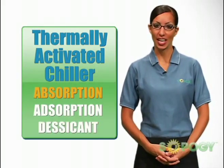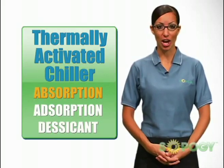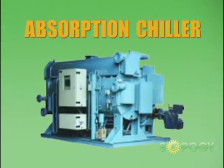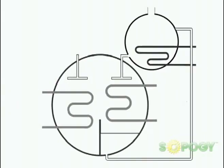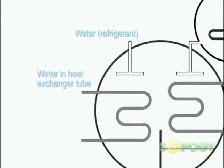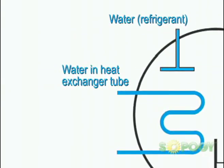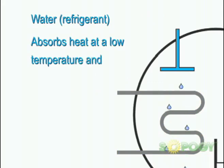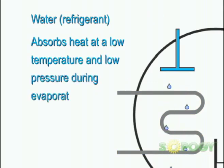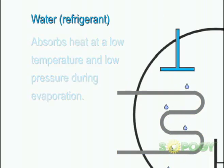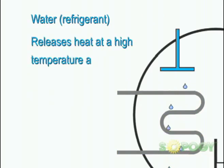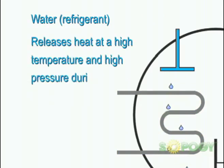Adsorption and desiccant chillers are less common, so we'll focus on the absorption chiller principle. In these systems, water — the refrigerant — absorbs heat at a low temperature and low pressure during evaporation, and releases heat at a high temperature and high pressure during condensation.